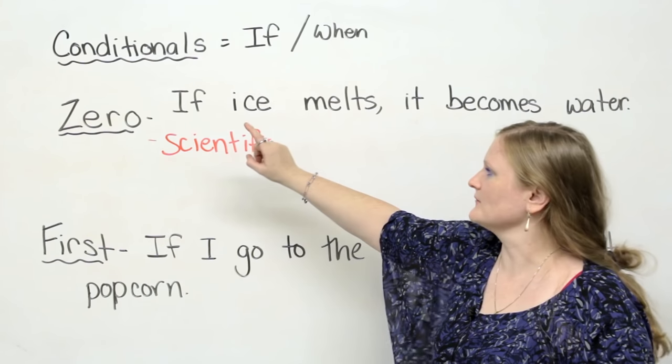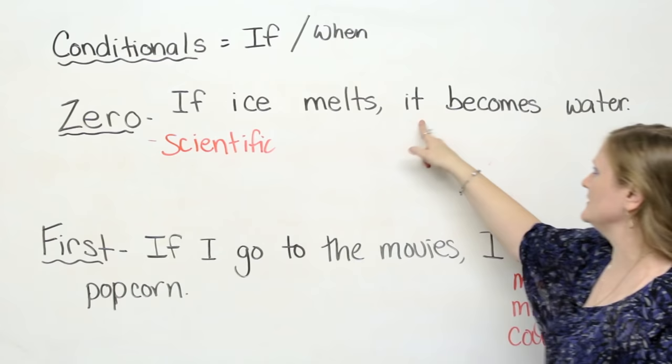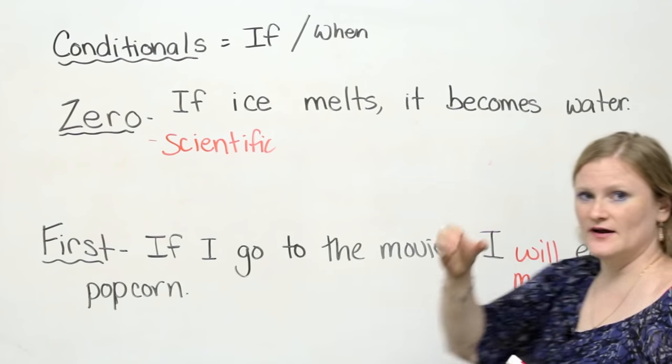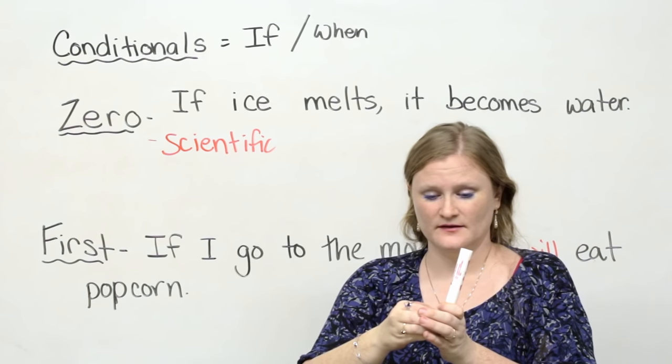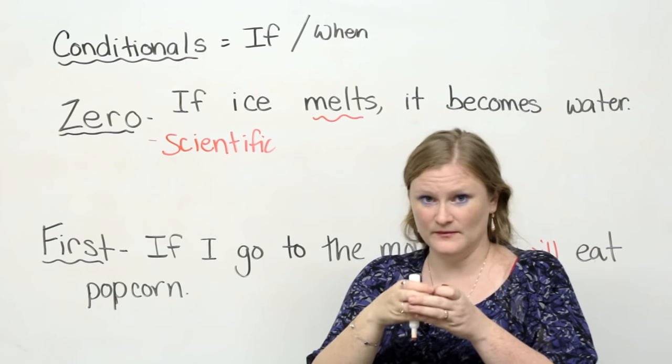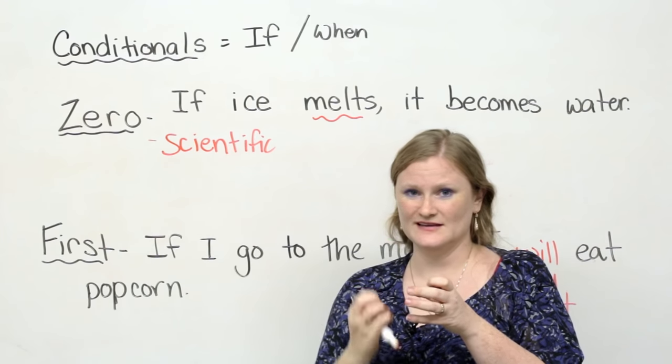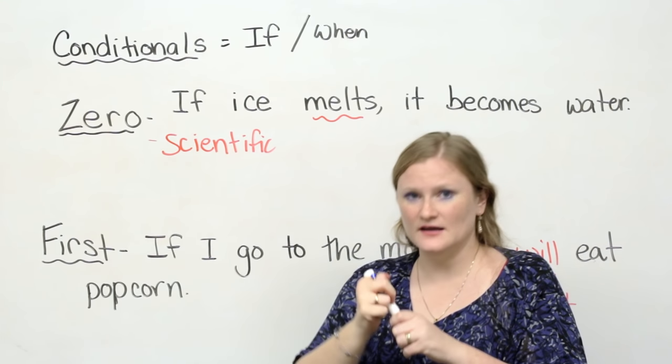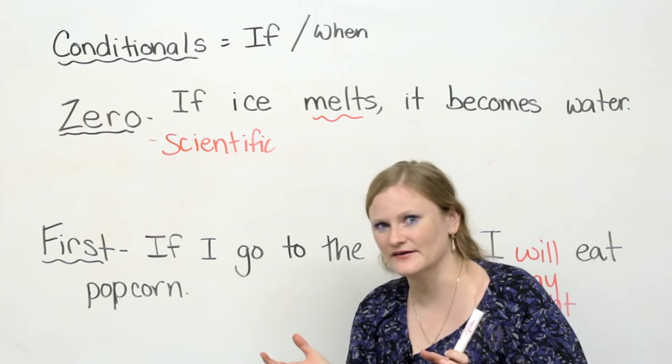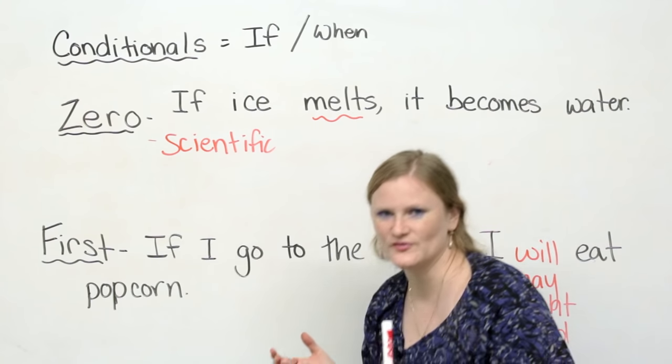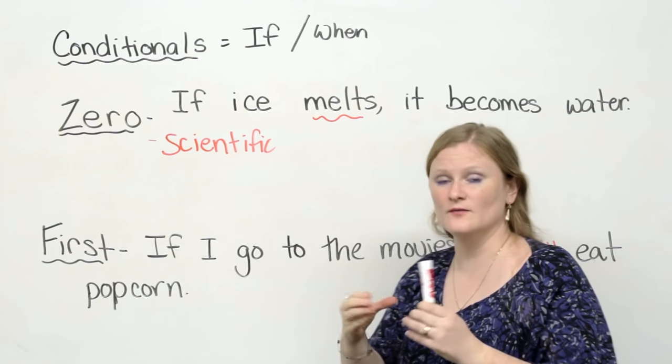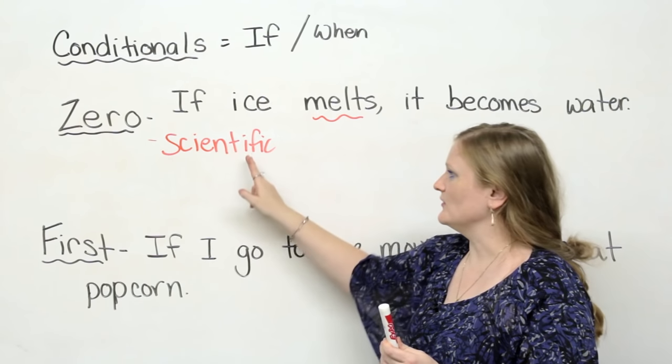Let's look at this first example. If ice melts, it becomes water. Always true. If I have an ice cube and I put it into the sun or I give it heat, this is what melts means - it changes from a solid to a liquid state with heat. It changes into water. Unfortunately it doesn't change into beer or money or gold or chocolates. Ice always will become water.